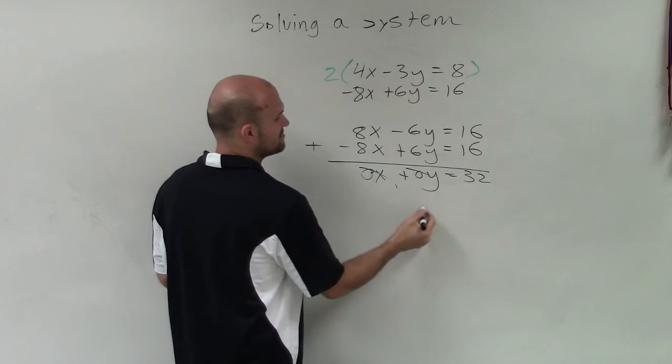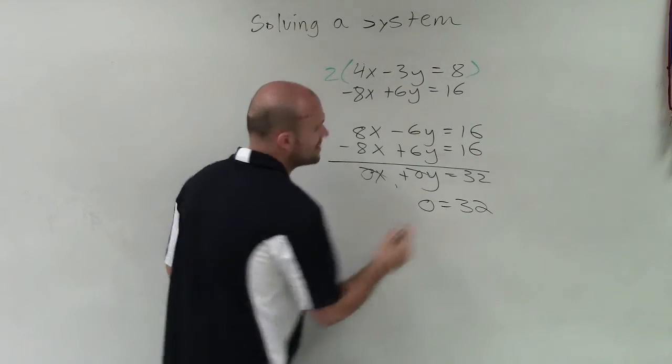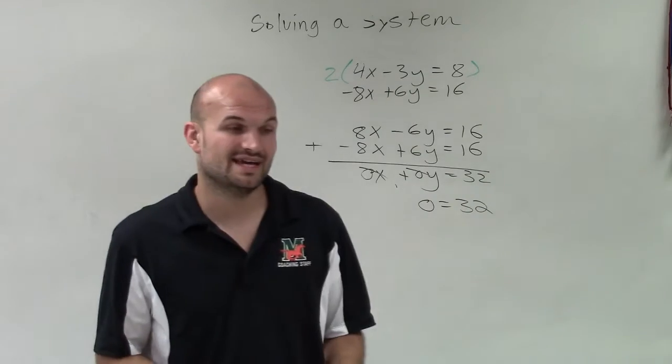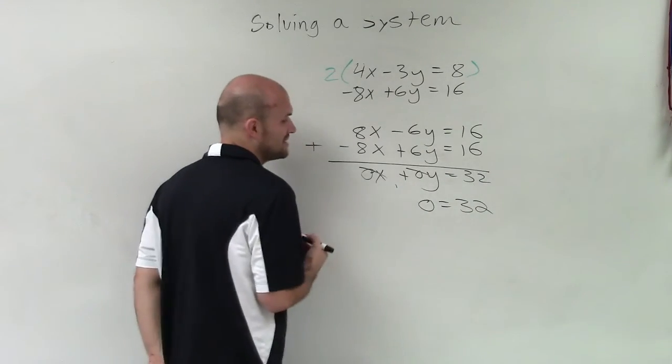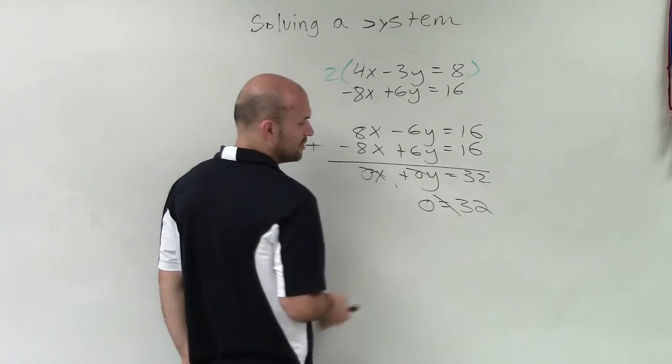Well, 0x plus 0y, that becomes 0, so 0 equals 32. Now, 0 equals 32 is not a correct statement. This is not equal to each other.